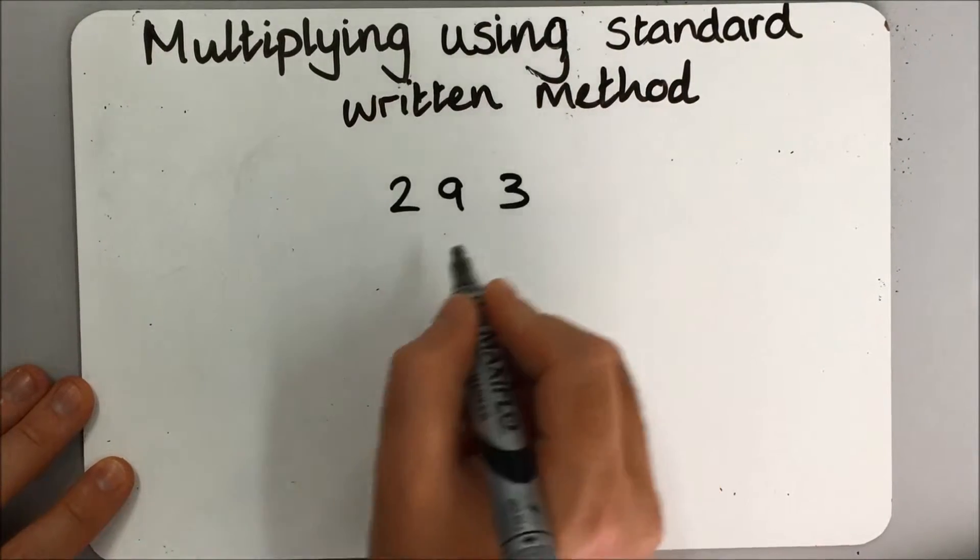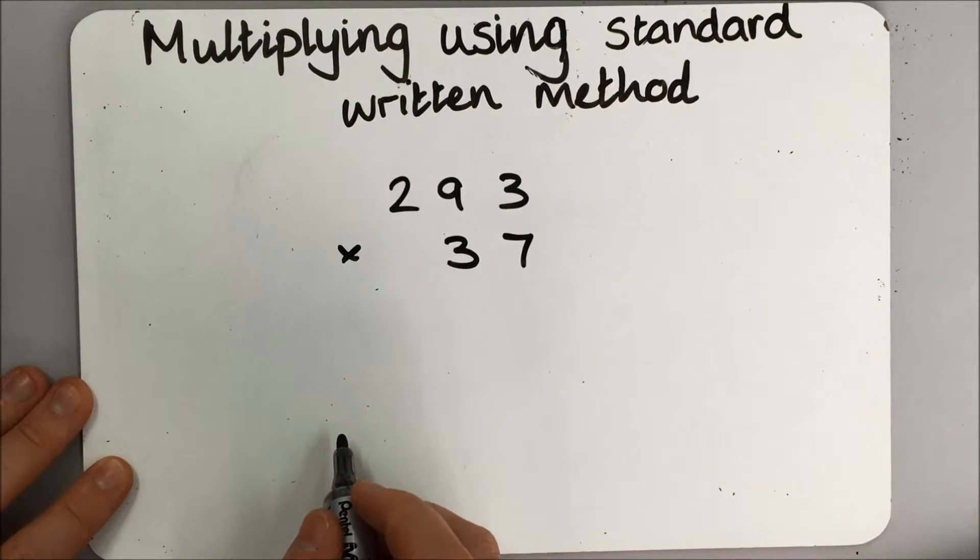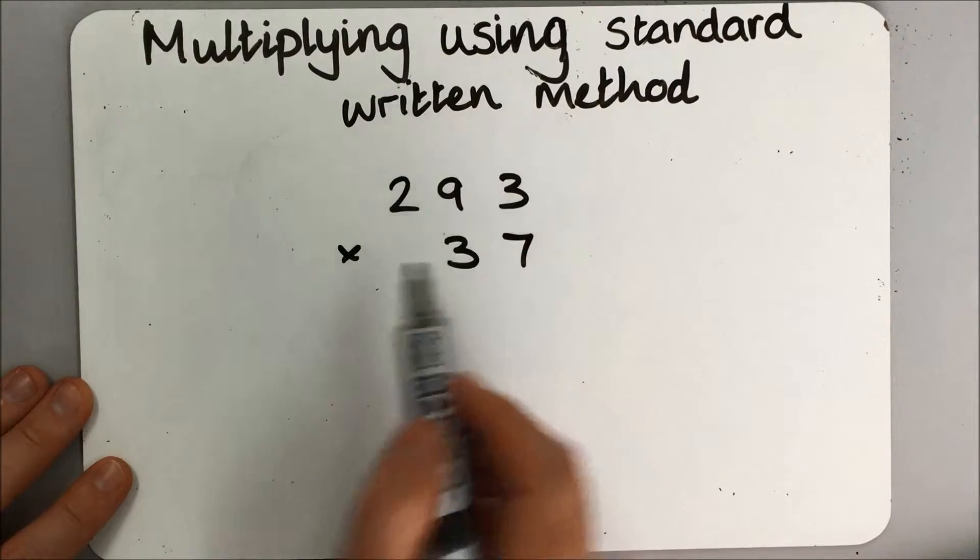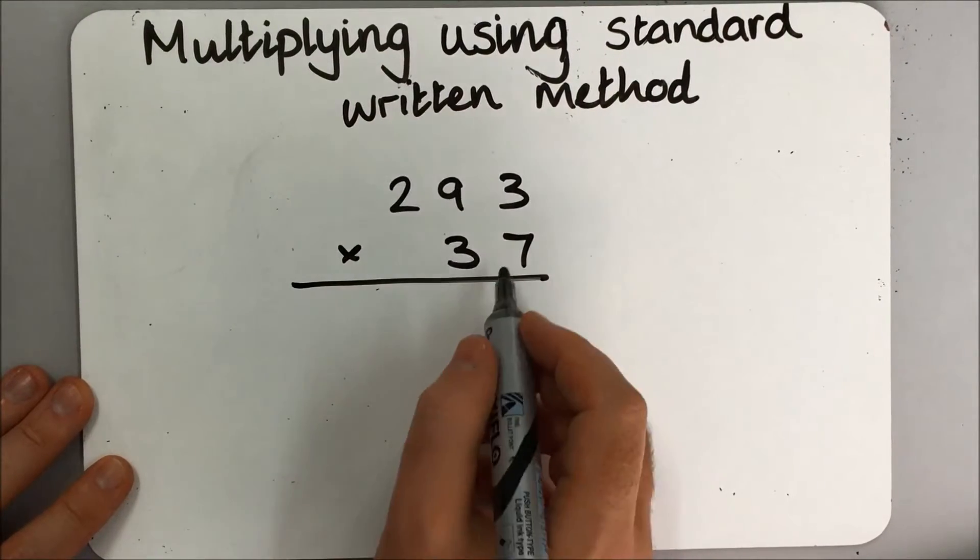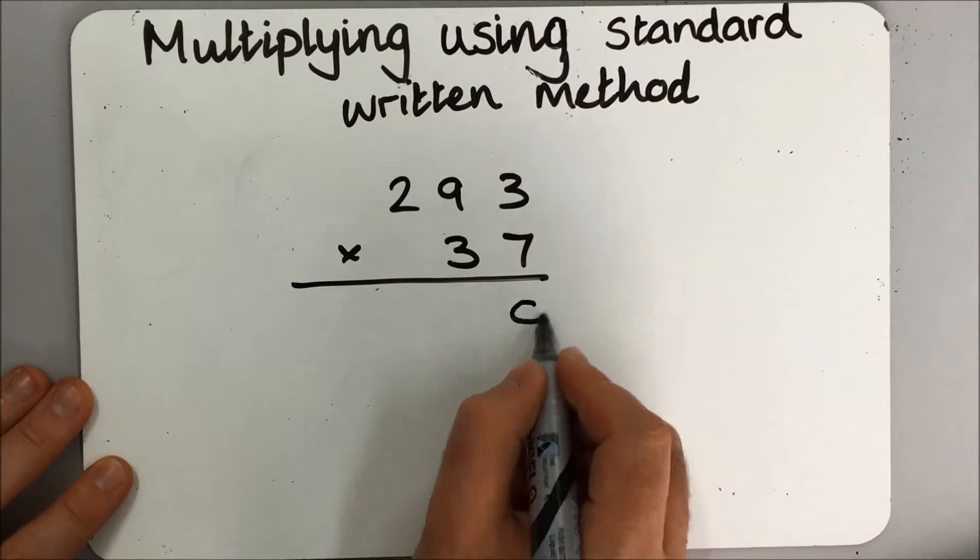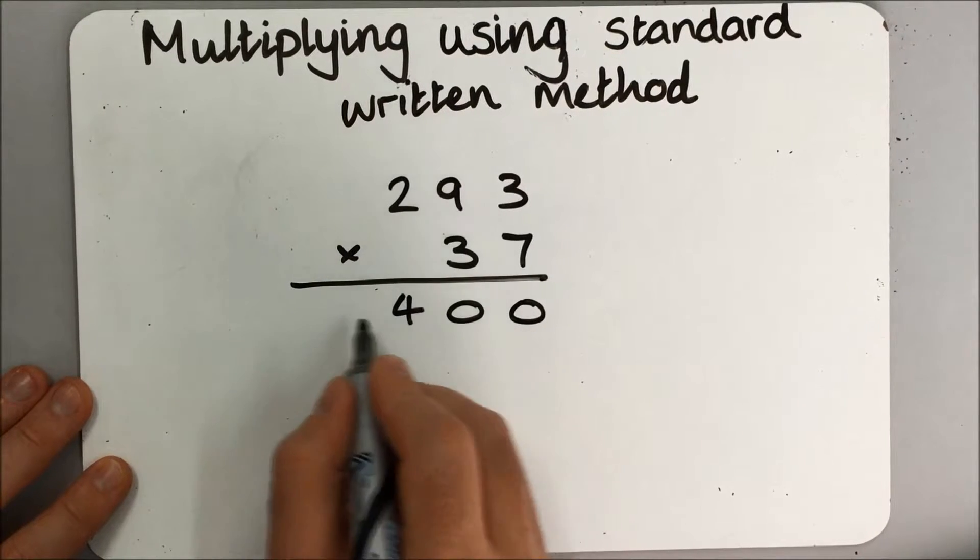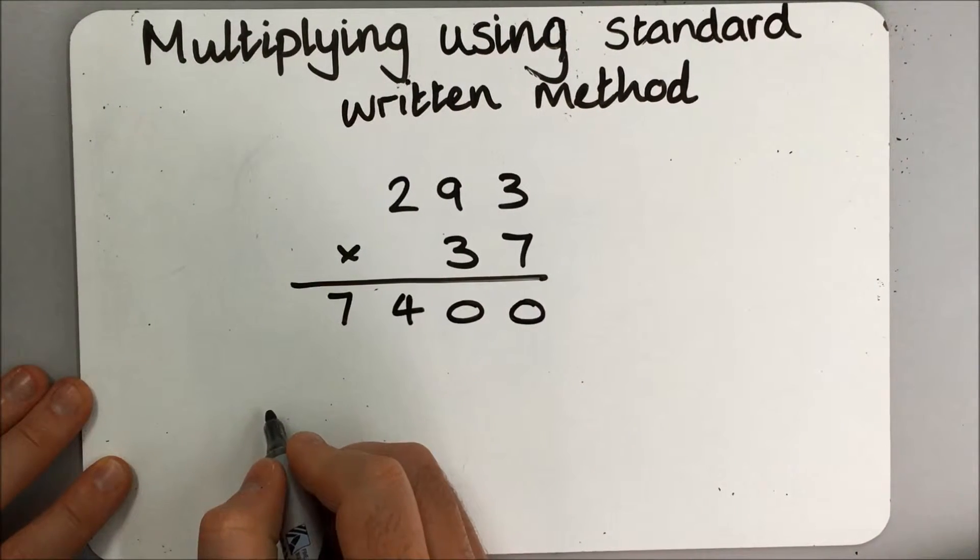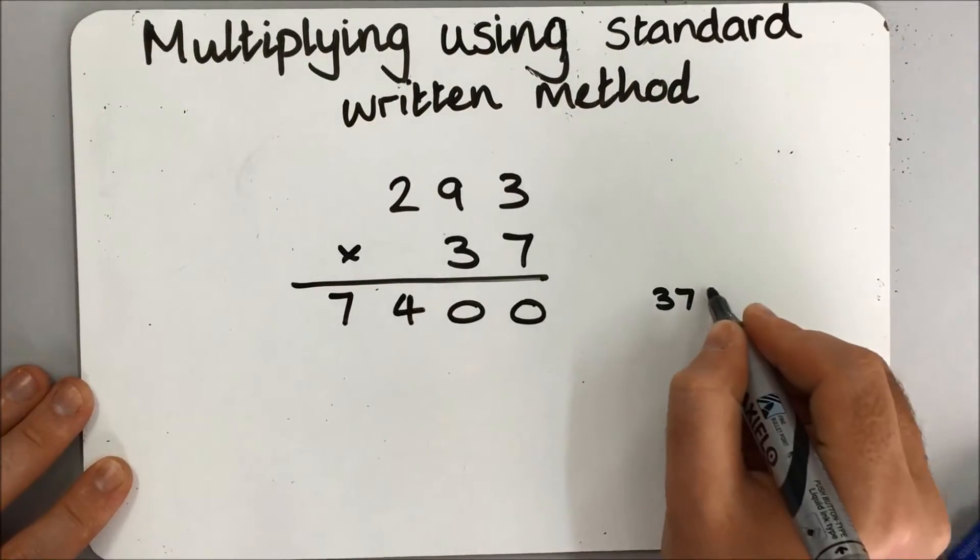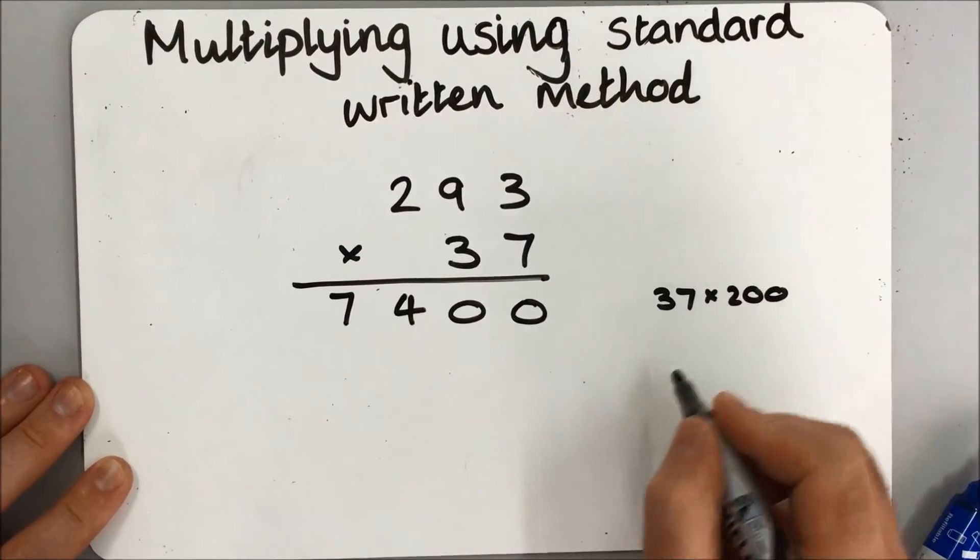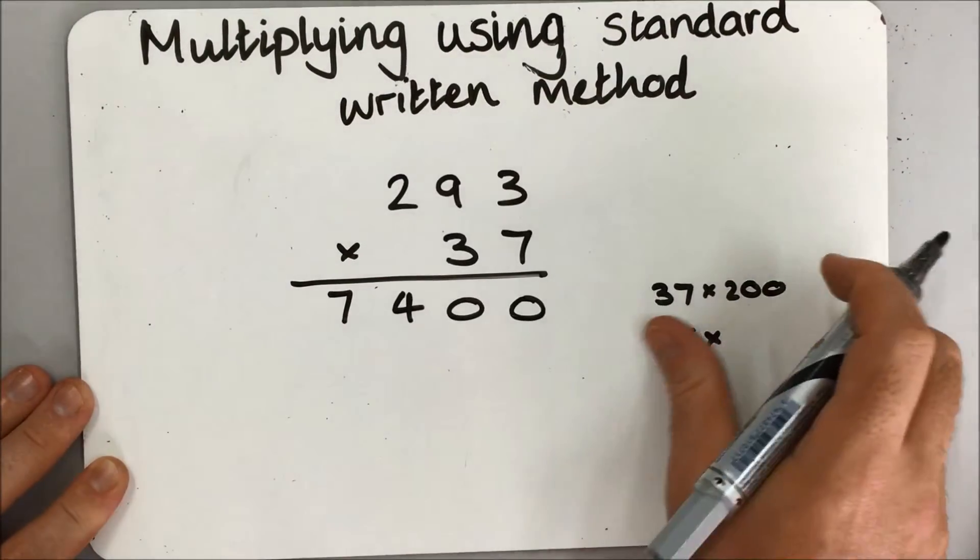So I'm going to start with 200 times 37. I am going to break this down into smaller parts to make it a little bit easier, and that would be 7400. If children need to, they can just write by the side just to remind themselves what they've done instead of different colors.